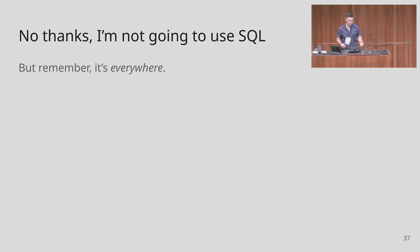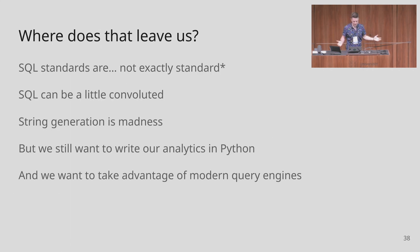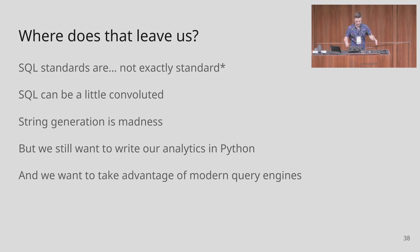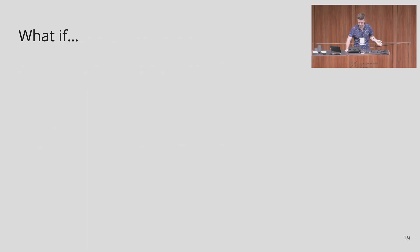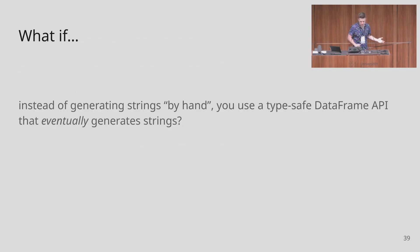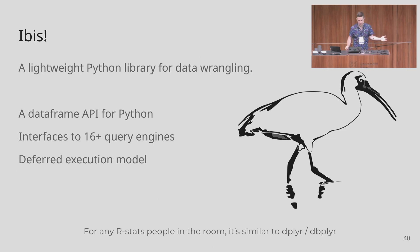So where does that leave us? SQL standards aren't really standard, SQL can be convoluted, and string generation is a nested hellscape. But we still want to write Python and take advantage of modern query engines. What if, instead of generating strings by hand, you could use a type-safe DataFrame API that eventually generates strings? That's what IBIS is — a lightweight Python library for data wrangling whose DataFrame API interfaces to 16+ query engines with a deferred execution model.